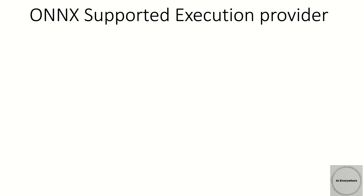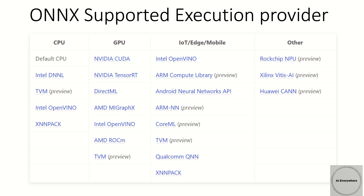ONNX also supports execution providers. Execution providers are special APIs designed by device vendors to accelerate neural network models on devices. These are the list of execution providers currently part of ONNX. For example, there is the Android Neural Networks API, a neural network API provided by Google. ONNX supports this API to run deep neural networks using it. Likewise, there are many execution providers currently supported by ONNX.